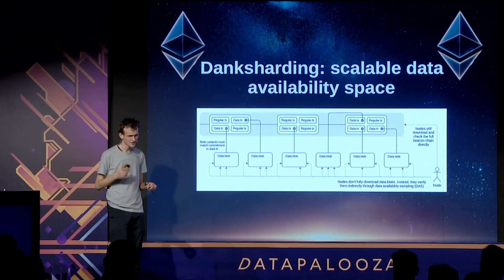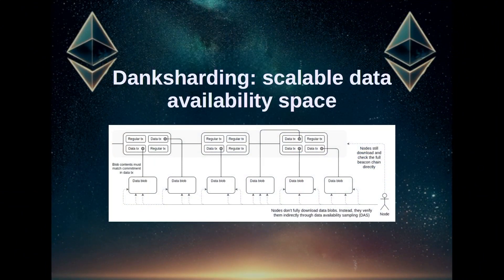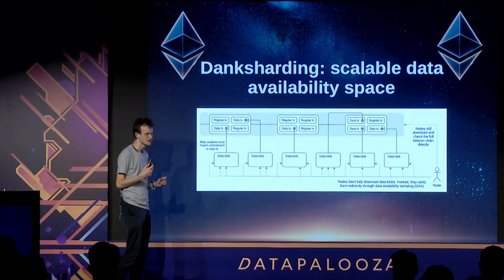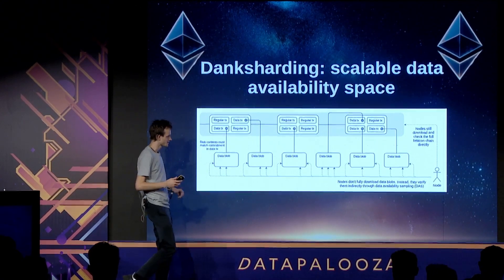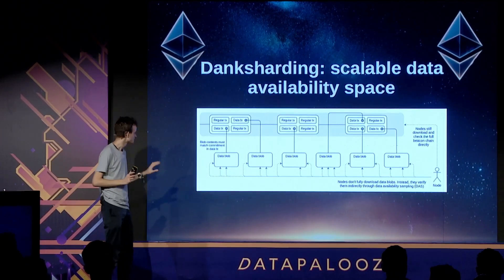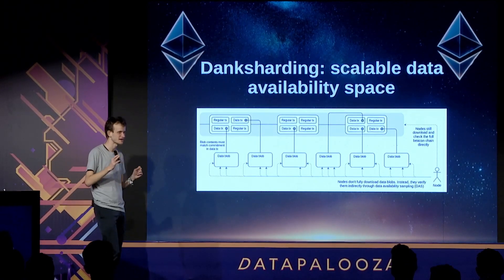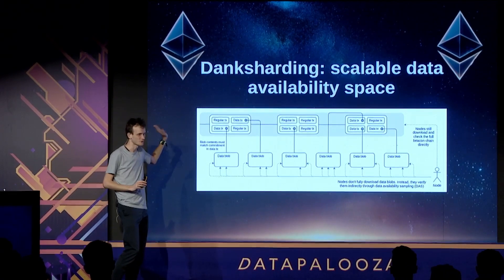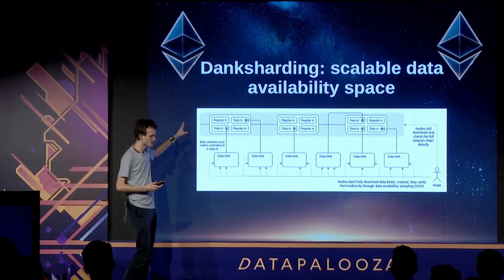Here is how danksharding works. You have Ethereum blocks at the top. Ethereum blocks can have two types of transactions: regular transactions, same as today, or data transactions. A data transaction does everything a regular transaction does, but also contains a hash of a blob — a blob is just a bunch of data. The underlying blob gets distributed through a separate peer-to-peer network. Think of it as: we break up the blob into tiny pieces and publish them on BitTorrent, while the Ethereum chain containing regular transactions and hashes of blobs gets pushed around like a regular blockchain — everyone downloads everything.